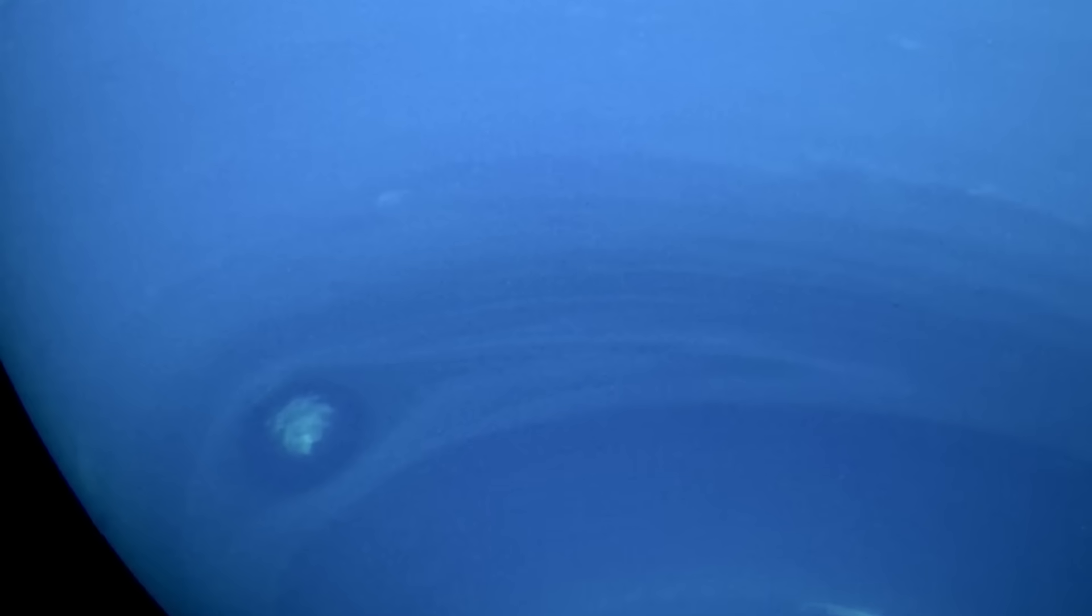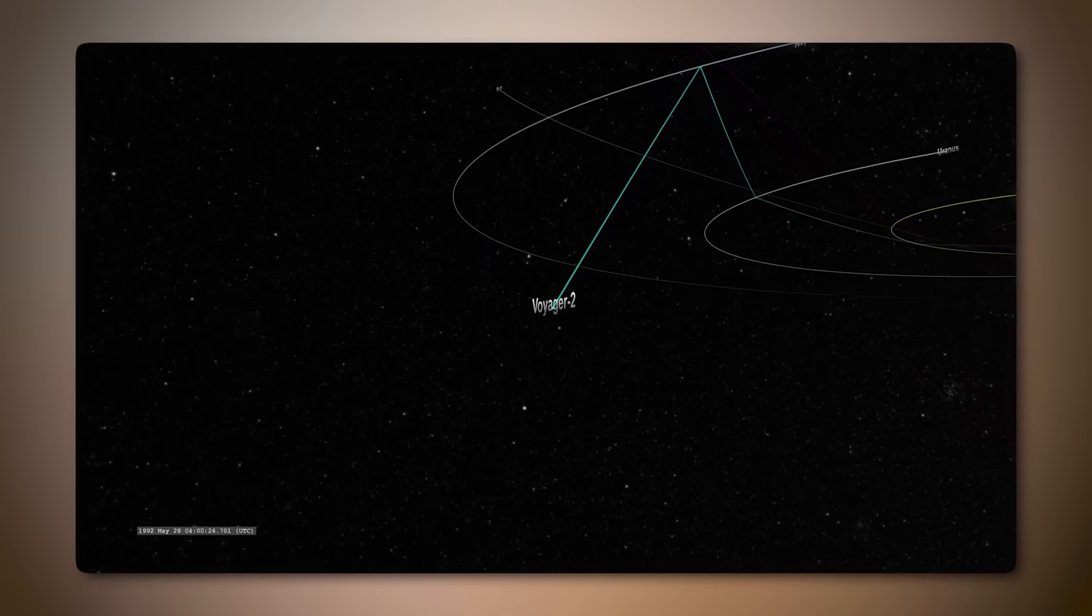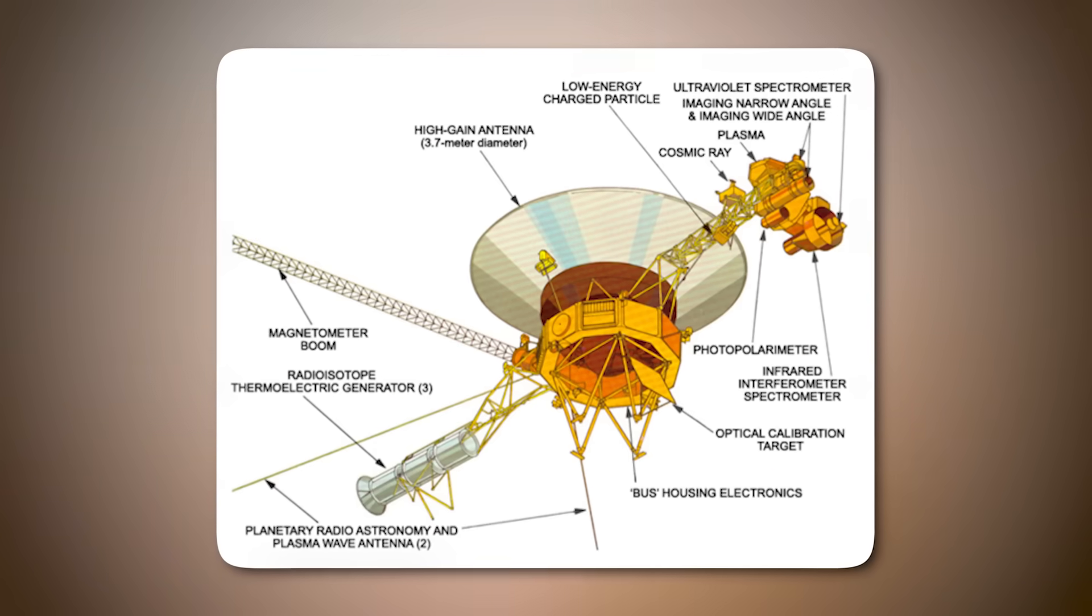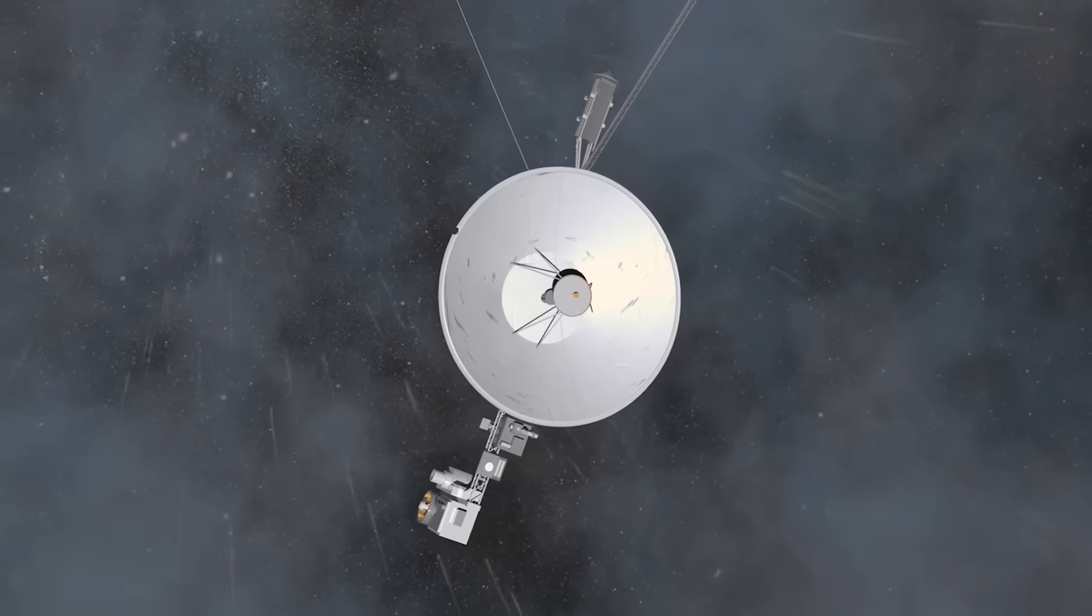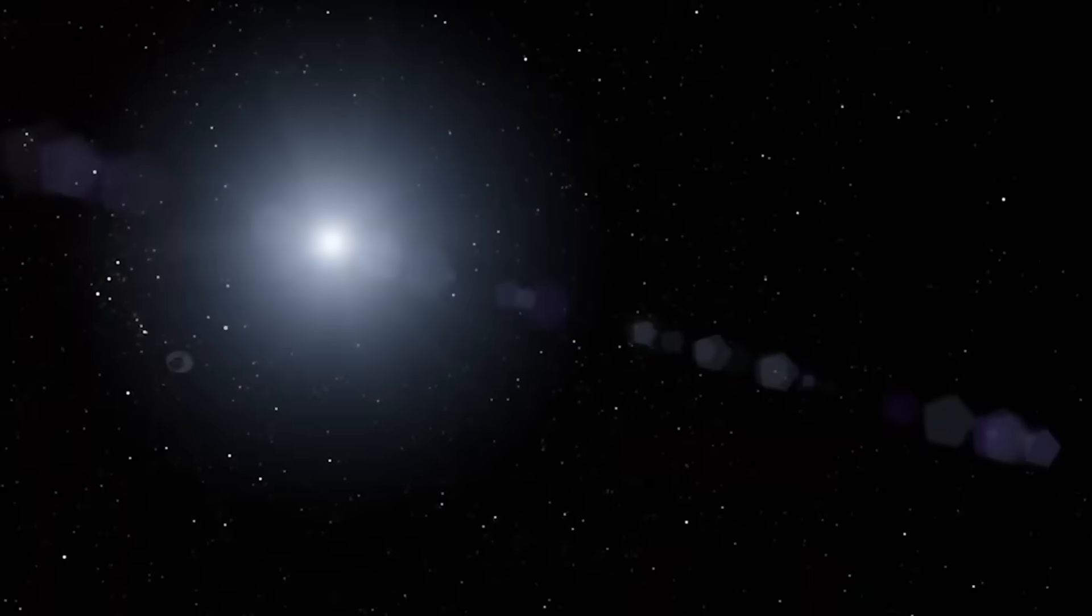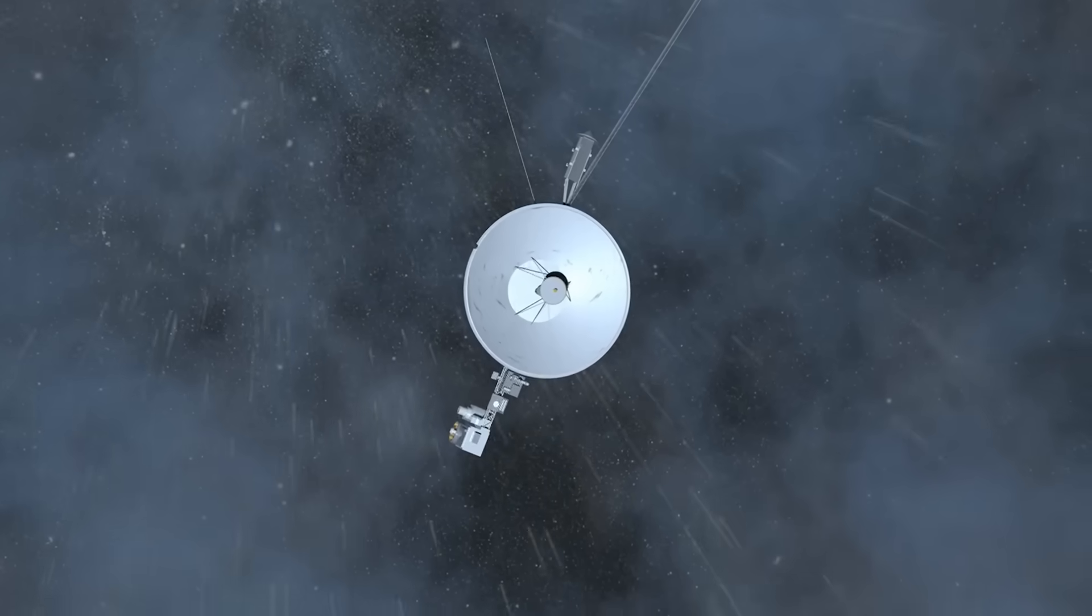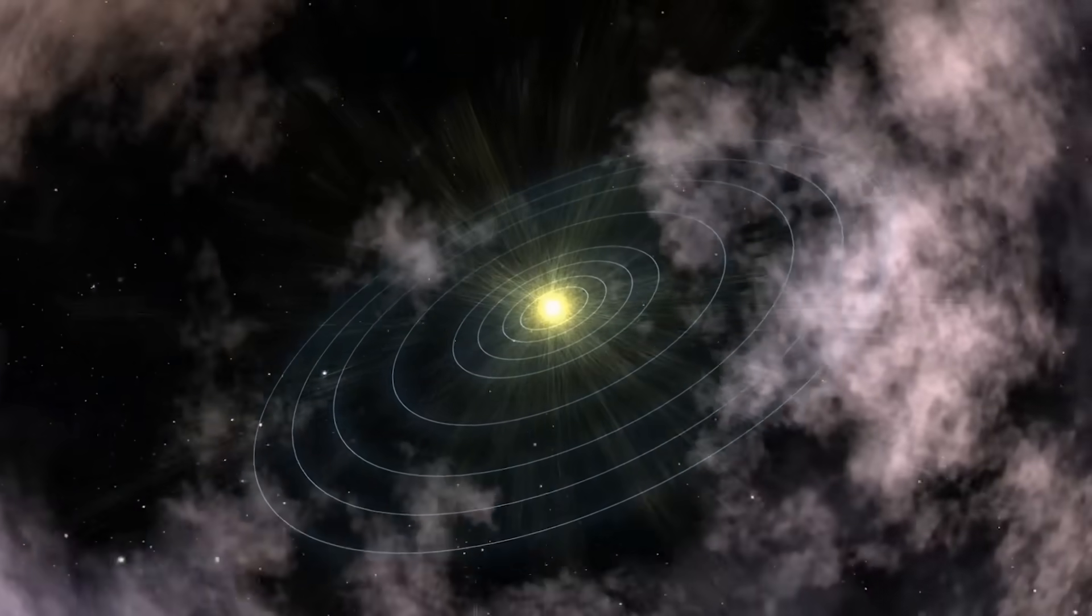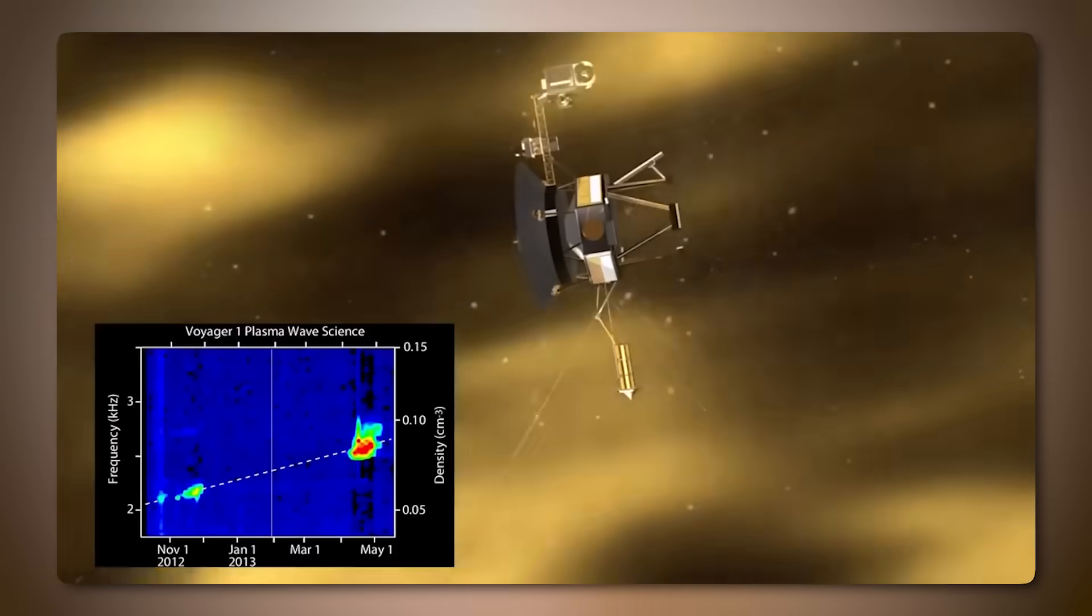This data helps scientists understand the galactic radiation environment. Low-energy charged particles (LECP) measures the presence of ions and electrons, giving insights into the heliosphere, the bubble of charged particles surrounding our solar system. Magnetometer (MAG) measures magnetic fields in space, particularly those in the vicinity of the outer planets and in the interstellar medium. Ultraviolet Spectrometer (UVS) and Photopolarimeter System (PPS) detect ultraviolet radiation and analyze light polarization, respectively. Due to the decreasing power supply, some instruments have been turned off to conserve energy. However, the remaining active instruments still provide valuable data as Voyager probes the outer reaches of our solar system and beyond.